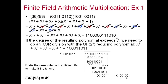For reduction, we always use the fixed irreducible polynomial x^8 + x^4 + x^3 + x + 1, which in binary is 1 0001 1011. We perform XOR division: align this reducing polynomial with the leading term of our product polynomial and XOR bit by bit. When a leading zero results, we omit it and continue.